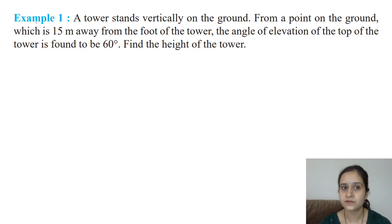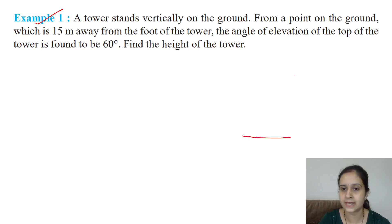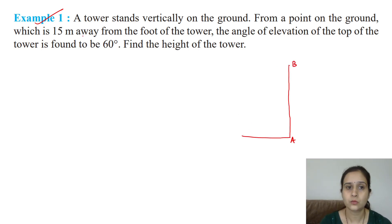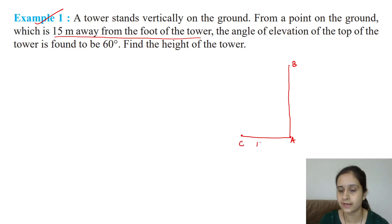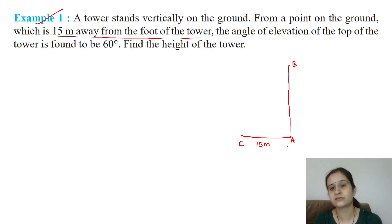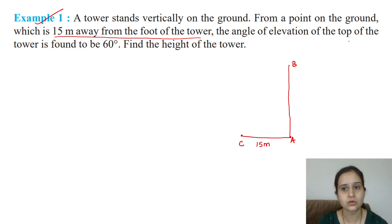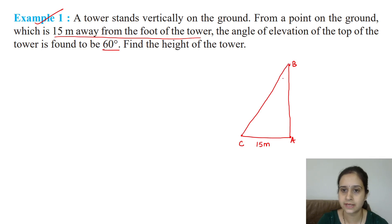Let's start with Example 1. A tower stands vertically on the ground — let's assume this is our ground and above it is a tower. From a point on the ground which is 15 meters away from the foot of the tower, let us say that point is C, which is 15 meters away from the foot of the tower.